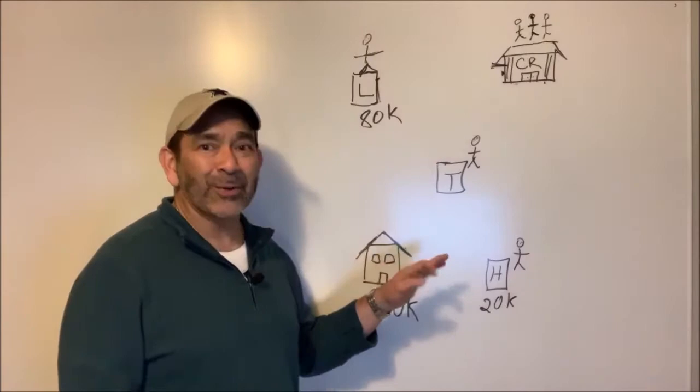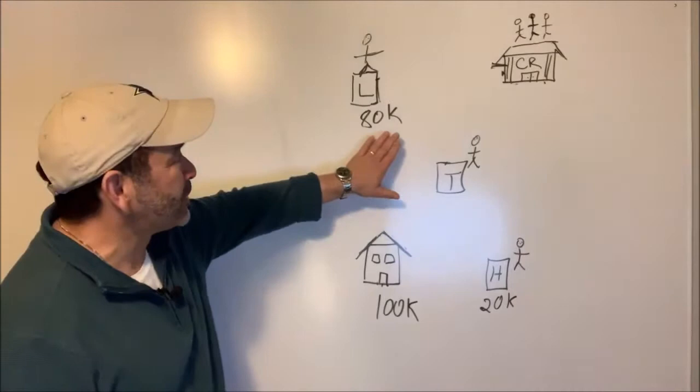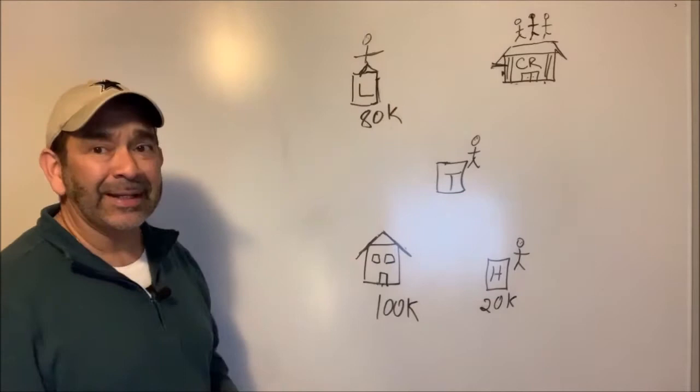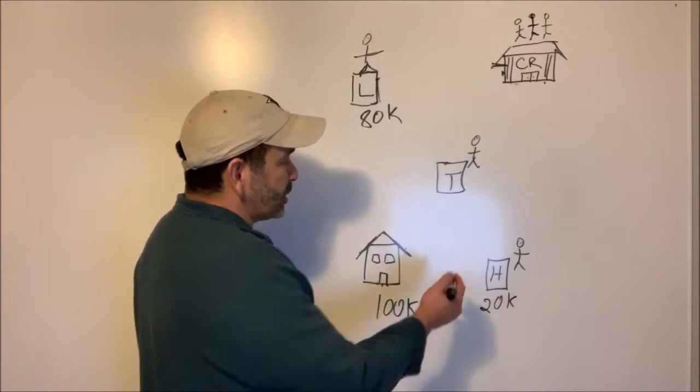In this example we're going to use a $100,000 house that Henry bought about a year ago. He put $20,000 down and he was working with Larry the lender who fronted him $80,000. This is what we call an 80/20 loan. When Henry closed on this house to purchase it, he sent the $20,000 to Tom the title guy, the title company, and Larry sent the $80,000 to the title company as well.